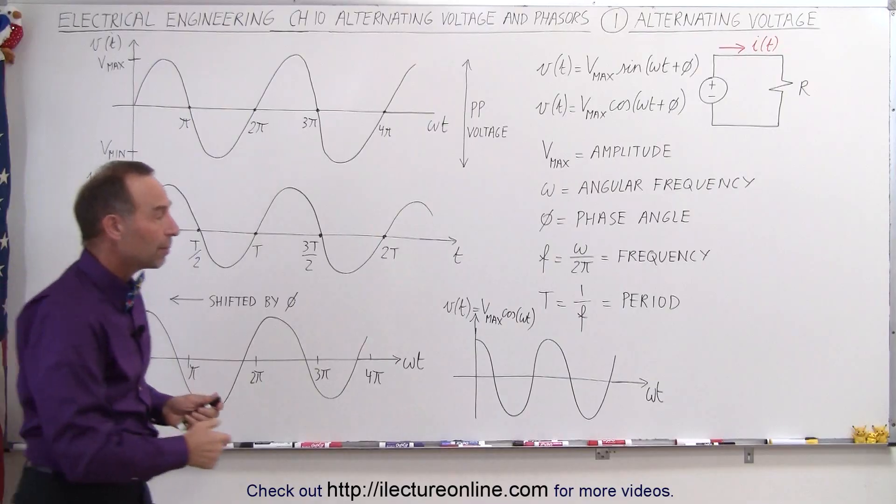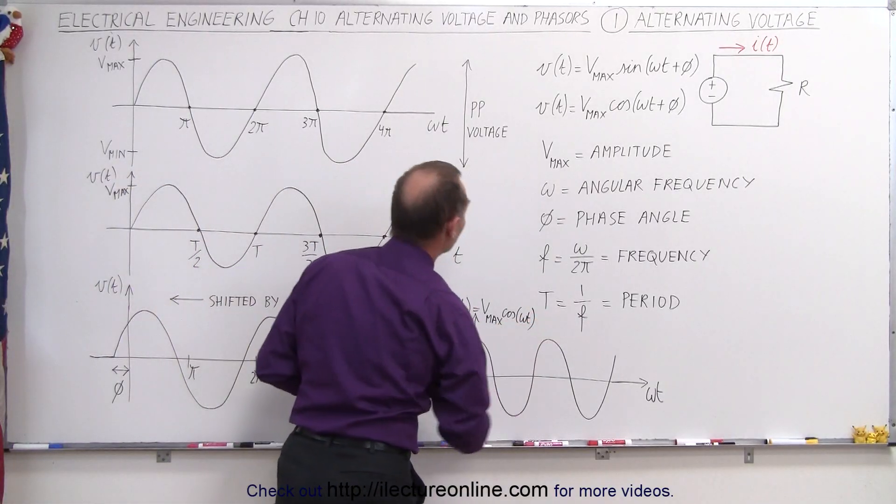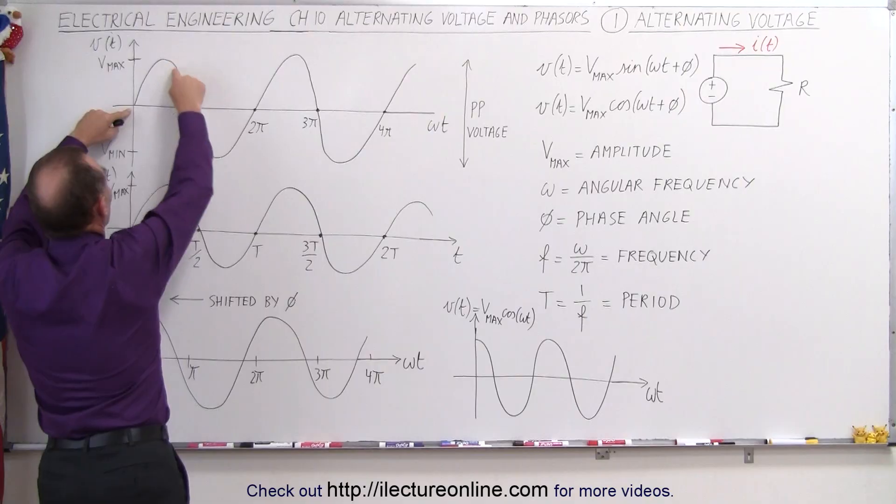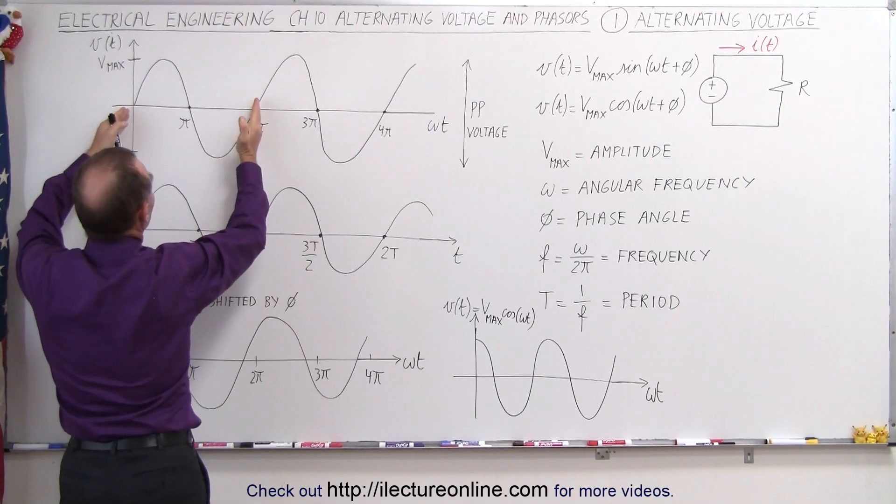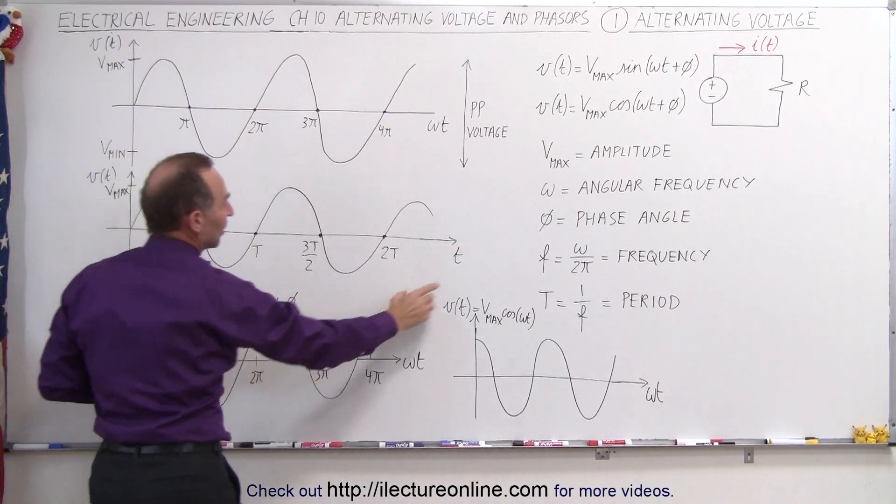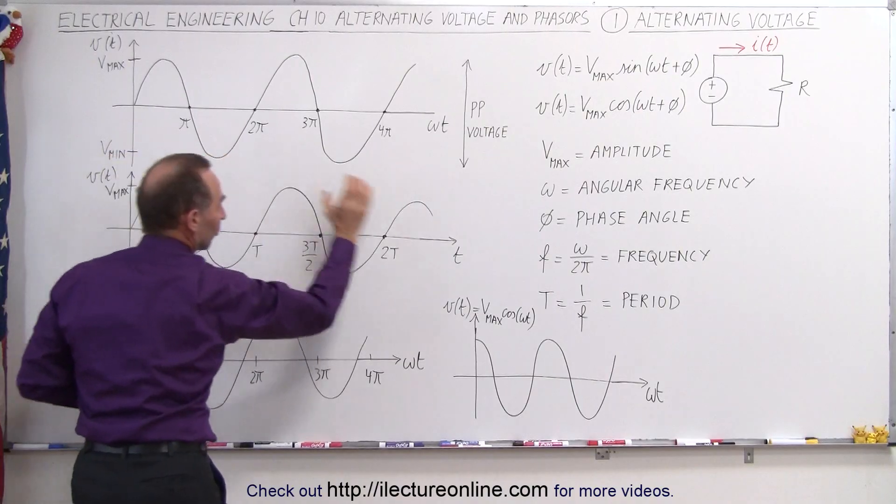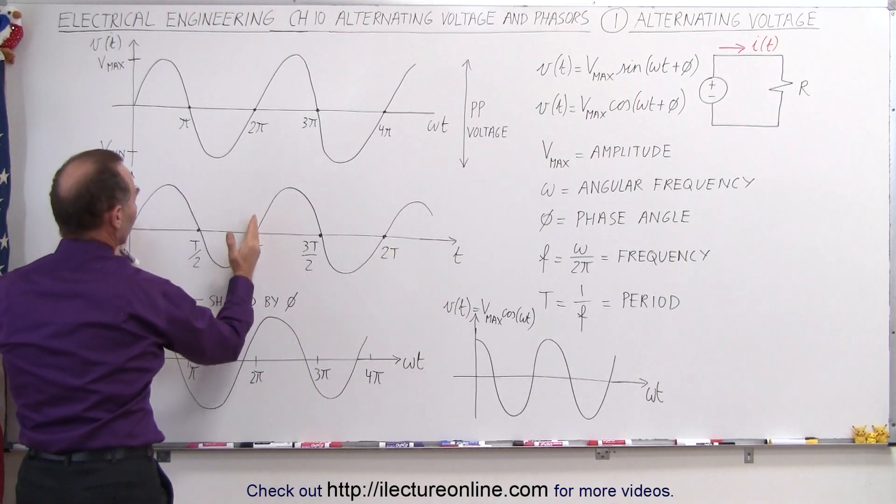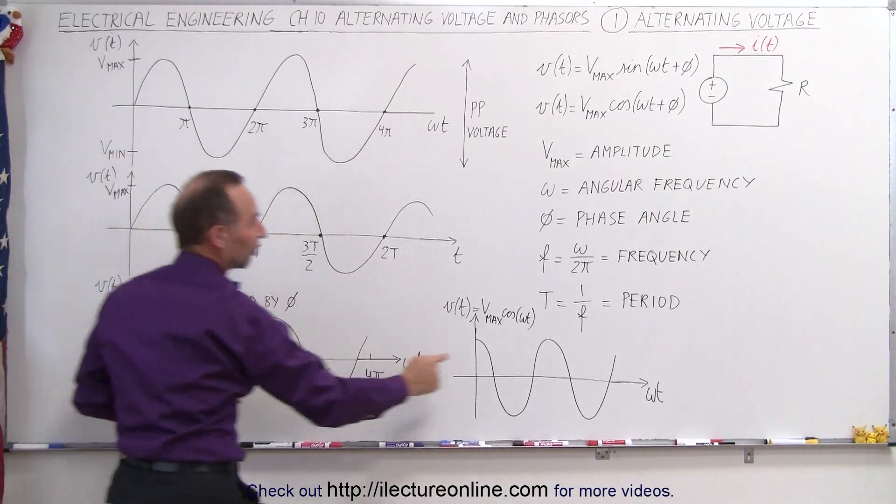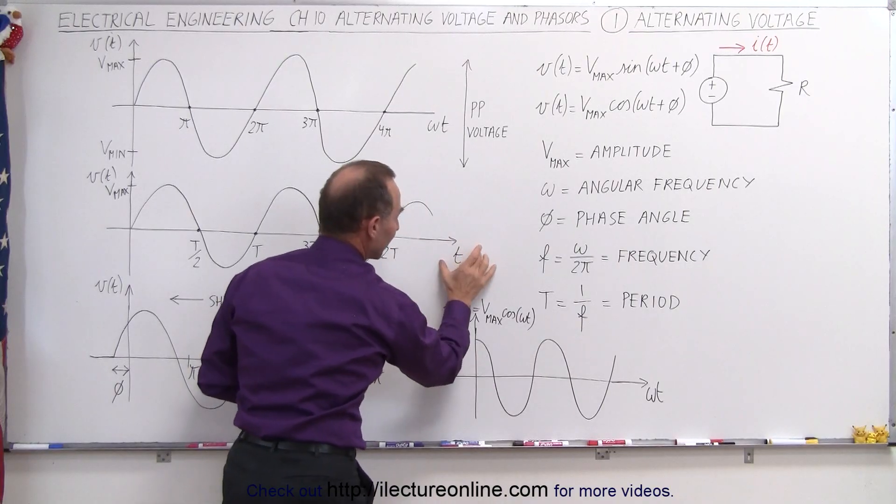And finally, we talk about the period of the oscillation. Notice that if we start over here and we do one complete cycle from there to there, that's called the period. Now if we graph it on a voltage versus time graph, then this distance would indeed be called the period because the period would be in seconds, that means time.